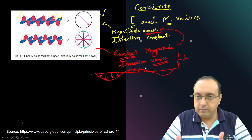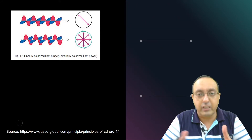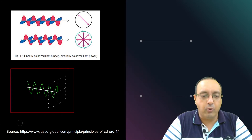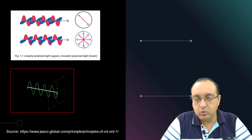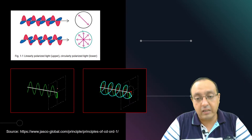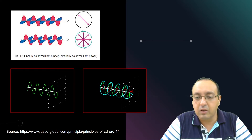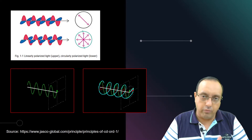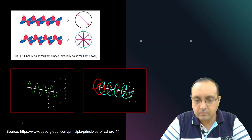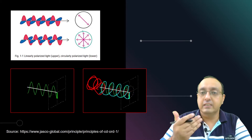Here is an animation of linear as well as circularly polarized light to illustrate the point further. The linearly polarized light vibrates back and forth — magnitude varies but direction is constant. In circularly polarized light, it makes a twist around the imaginary axis because both fields, shown in red and green, are out of sync by a quarter wavelength, producing the twist. This is the foundational principle of circular dichroism.